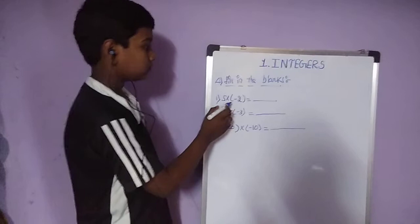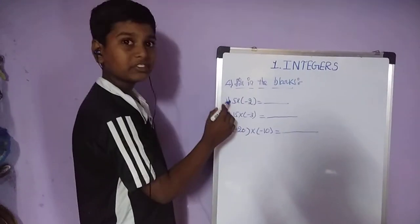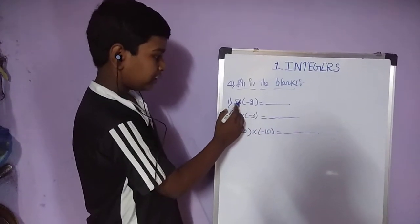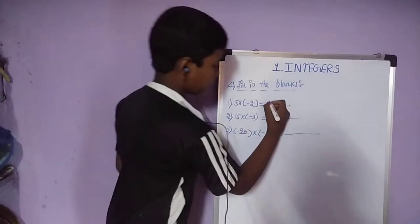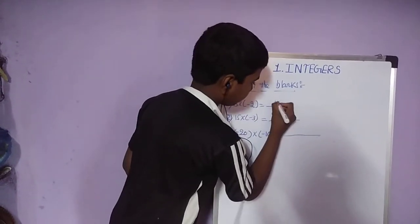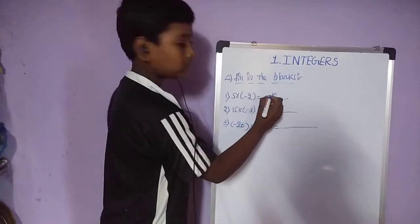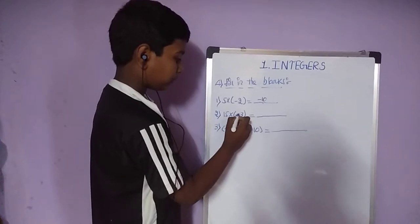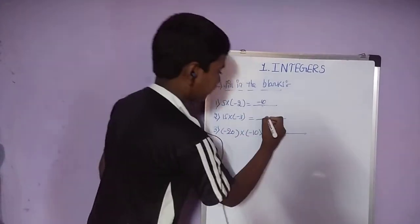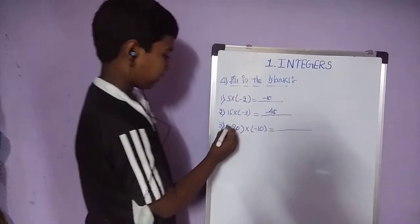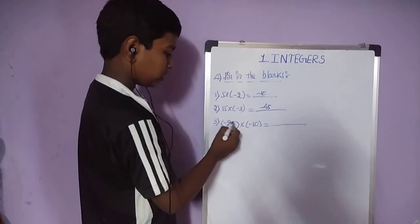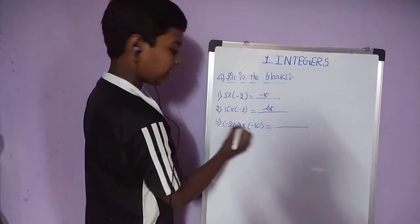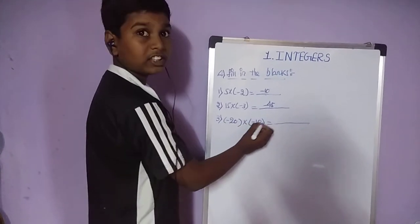Next question — fill in the blanks. First: 5 into bracket minus 2 close bracket. 5 into 2 is 10, and the minus comes in, so the answer is minus 10. Second: 15 into bracket minus 3 close bracket. 15 into 3 is 45, so the answer is minus 45. Third: bracket minus 20 bracket into bracket minus 10 bracket. Minus into minus is equal to plus, so 20 into 10 is equal to 200.